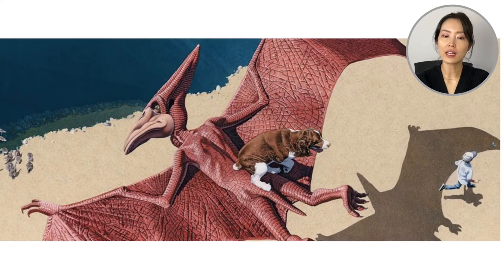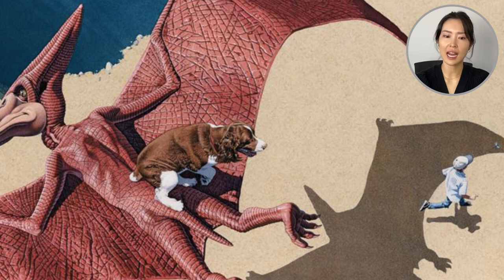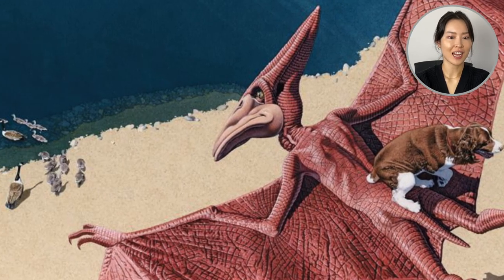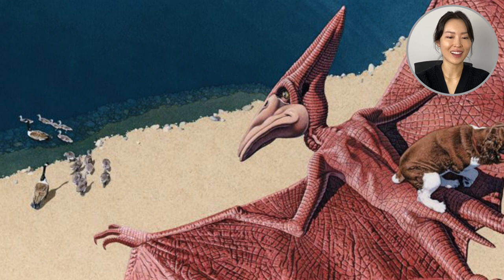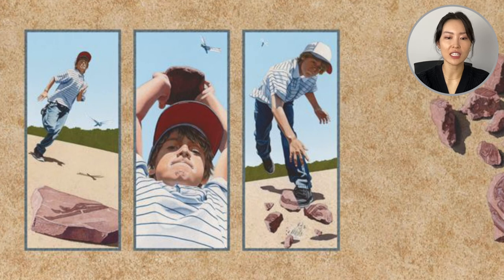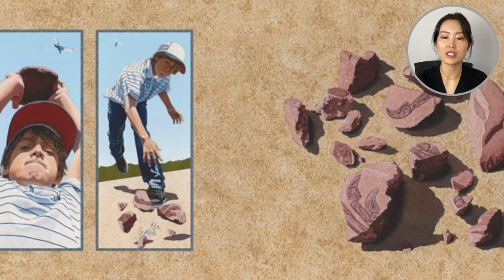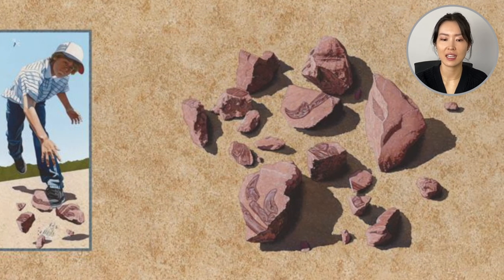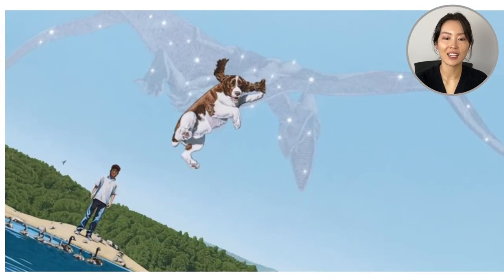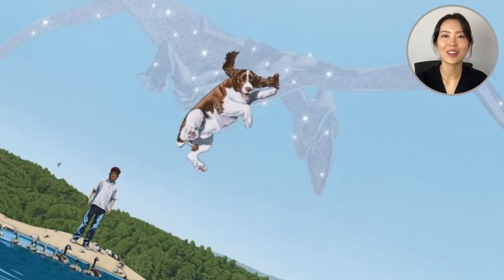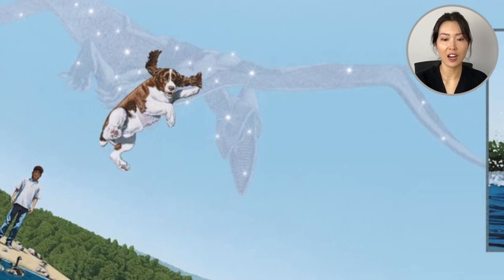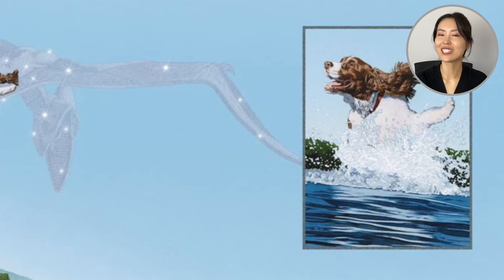He runs the opposite way from the pterodactyl now. The pterodactyl seems to be eyeing the geese. So the boy sees the pterodactyl fossil, picks up a heavy stone, and throws it at the fossil. The fossil crumbles into many pieces. And just like that, with a sparkle, the pterodactyl fades.